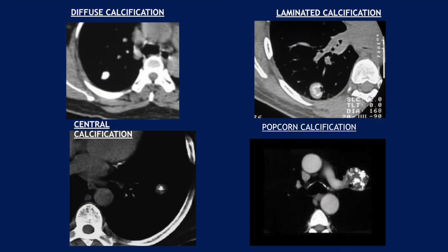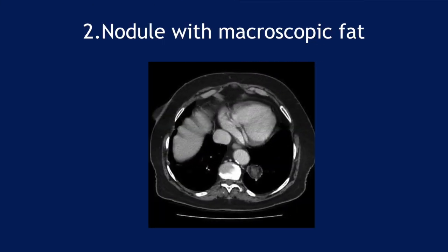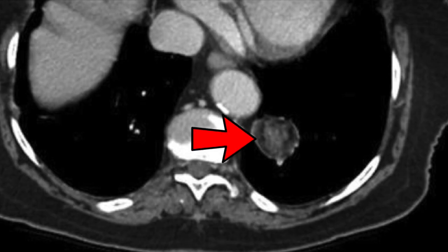These kinds of calcifications are definitely benign: diffuse calcification, laminated calcification, central calcification, and of course the popcorn calcification of hamartoma. The second feature to call a nodule benign is a nodule with macroscopic fat — we are looking at a hamartoma here.